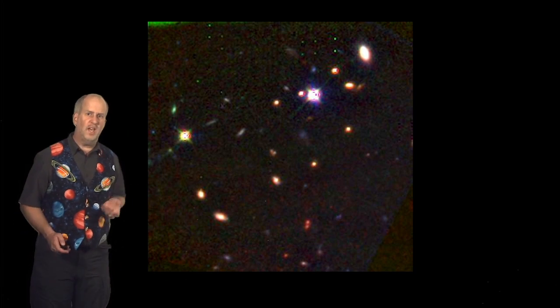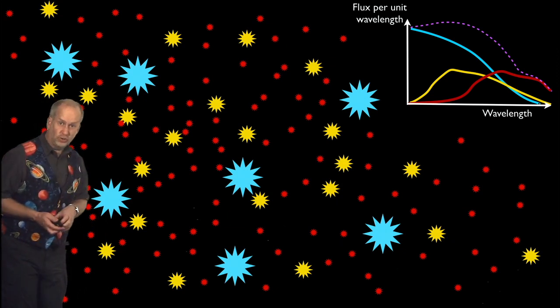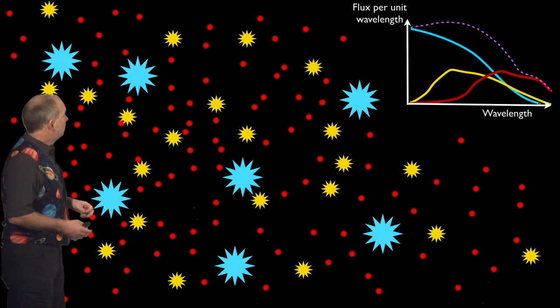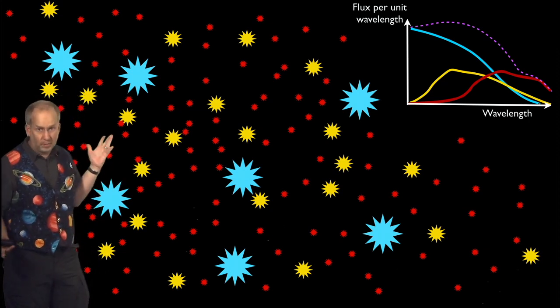Now, how do you get a red-colored galaxy? Well, galaxies are just collections of stars. And generally speaking, you get some blue stars, some yellow stars, and some red stars, and every color in between, of course.